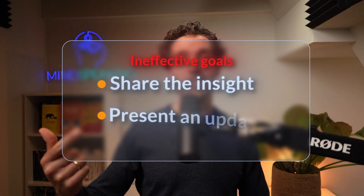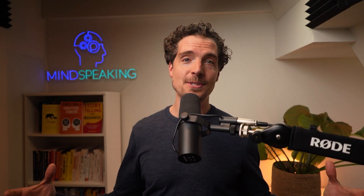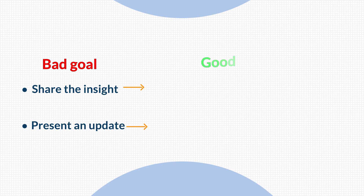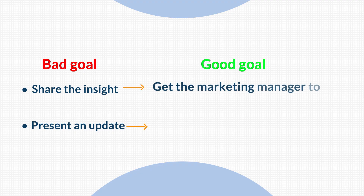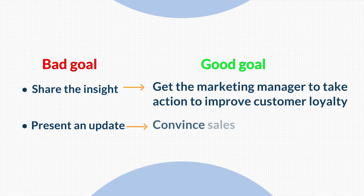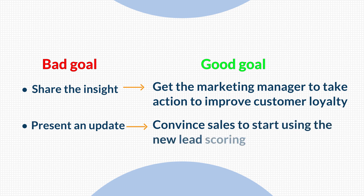Let's start with G. Before you touch any slides, write down your goal. But here's the mistake — most people think about what they are going to do. Here are some examples of ineffective goals: share the insights, present an update. These are activities, not goals. The real goal is what happens after. It's about the action you want your audience to take. Because you're not just there to inform, you're there to get people to act. Here's what good goals sound like: get the marketing manager to take action to improve customer loyalty, or convince sales to start using the new lead scoring model.